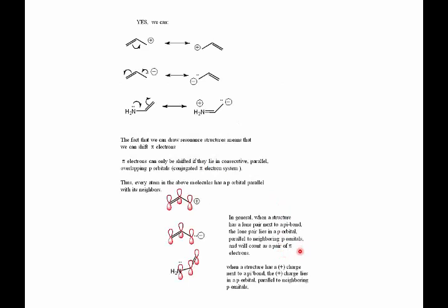Another generalization: if we have a structure and we see a plus charge next to a pi bond, that plus charge lies in a p orbital that is parallel to the neighboring p orbitals. Remembering this will help us decide whether a molecule is aromatic or not.